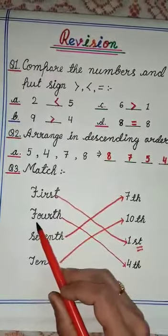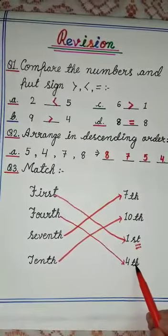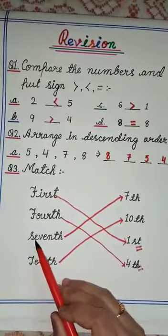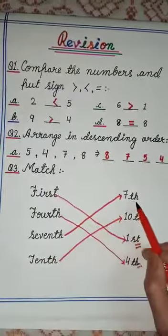Then we have fourth. F-O-U-R-T-H. Fourth. So fourth can be written like this. Then we have S-E-V-E-N-T-H seventh. So seventh can be written like this.